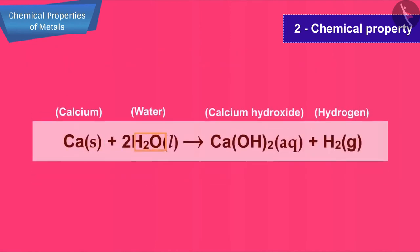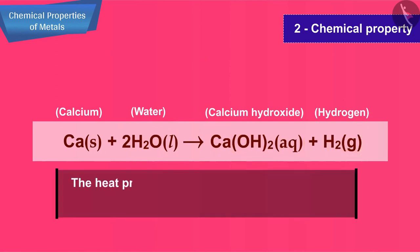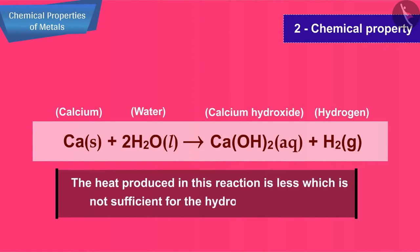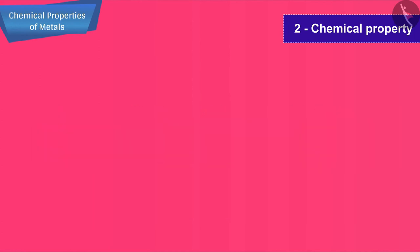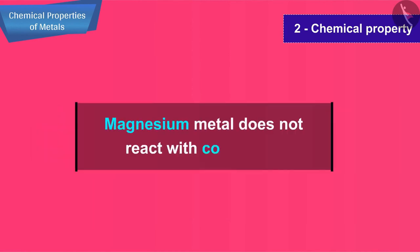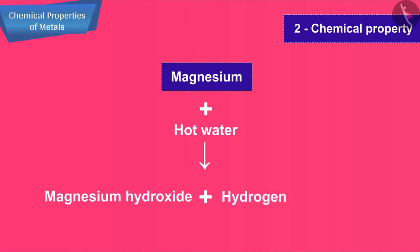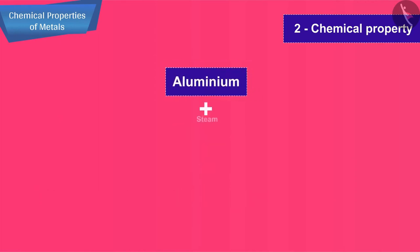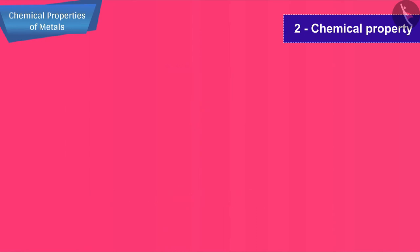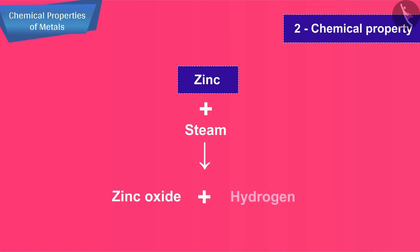Calcium reacts with cold water to form calcium hydroxide and hydrogen gas. The heat produced in this reaction is less, which is not sufficient for the hydrogen to catch fire. Magnesium metal does not react with cold water. It reacts with hot water to form magnesium hydroxide and hydrogen gas. Aluminium reacts with steam to form aluminium oxide and hydrogen gas. Zinc reacts with steam to form zinc oxide and hydrogen gas.